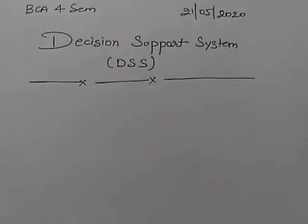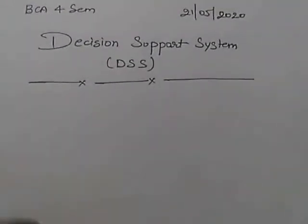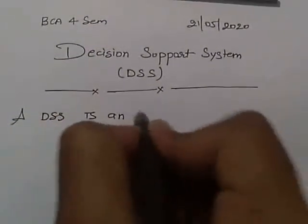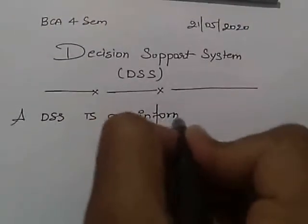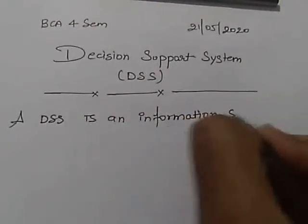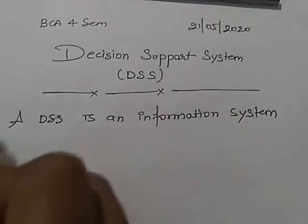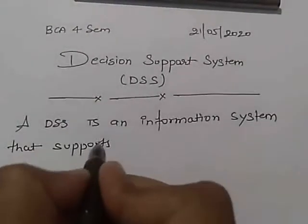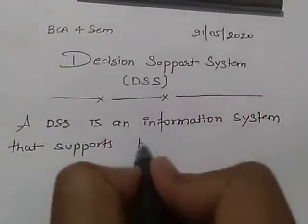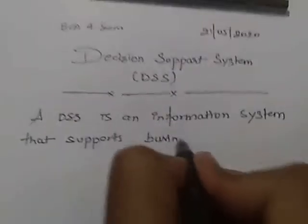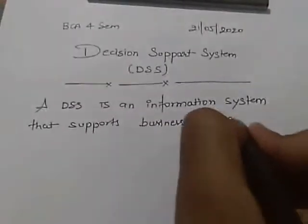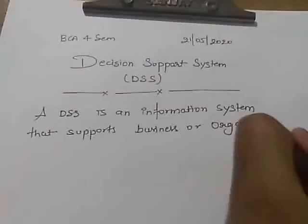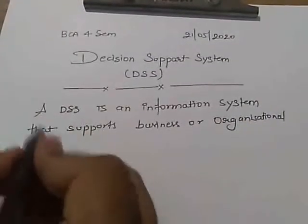Today we will discuss about the Decision Support System. A DSS is an information system that supports business or organizational decision-making activities.